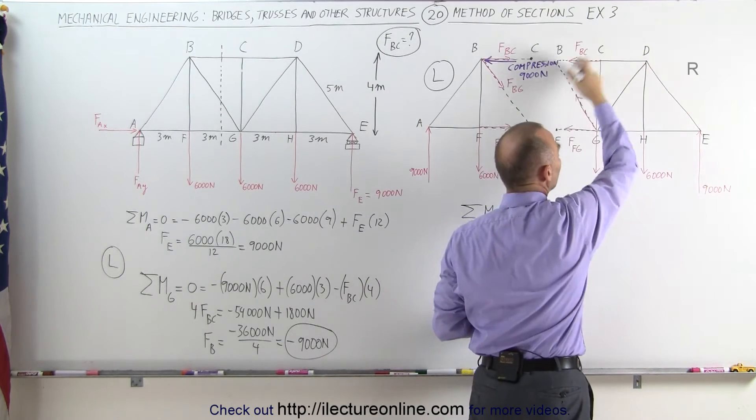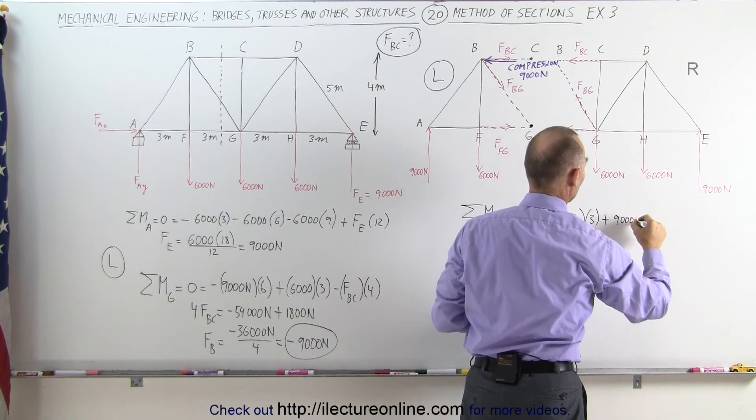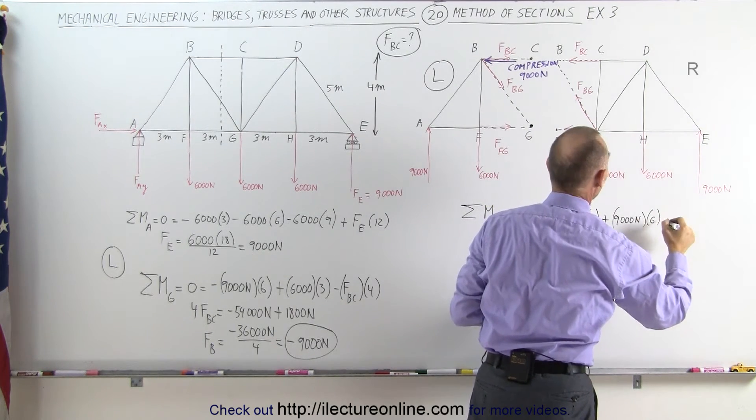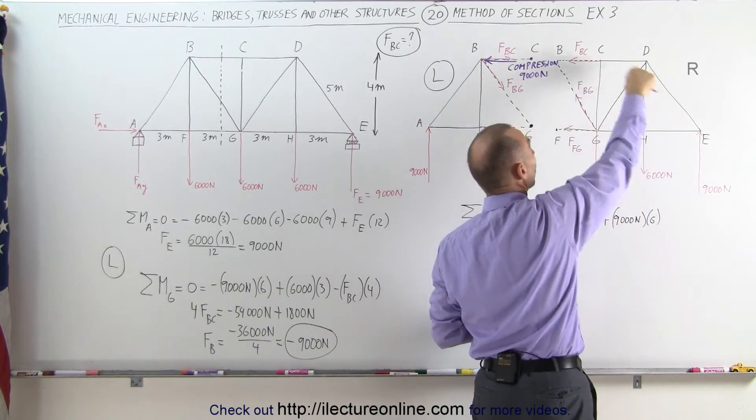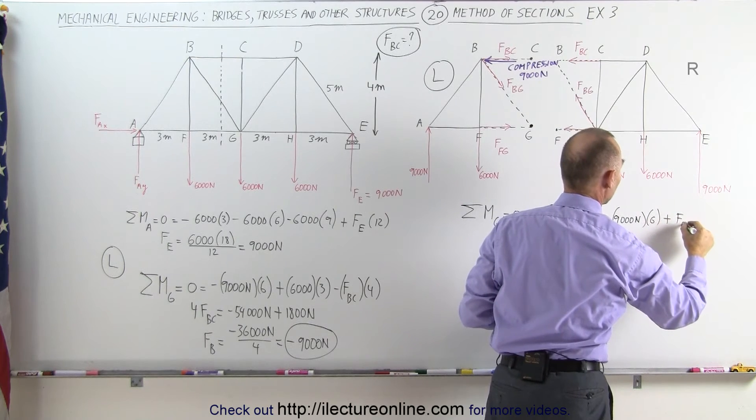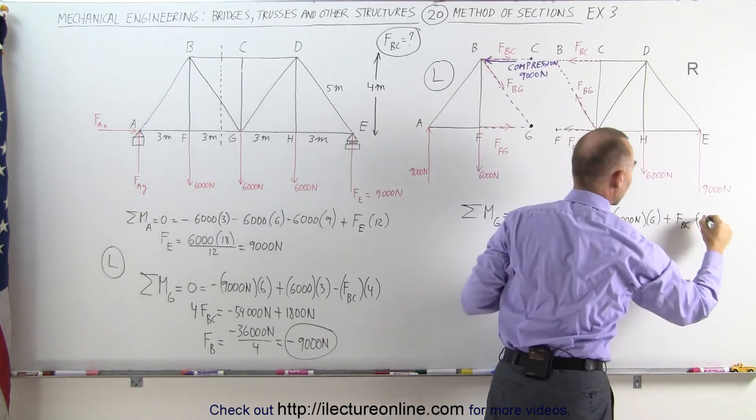Plus, because this gives us a counterclockwise torque, that would be plus 9,000 Newtons multiplied times the distance of 6 meters. And then here, this also gives us a counterclockwise torque that also would be positive, plus FBC times the distance from there to there, which is a 4 meter distance.